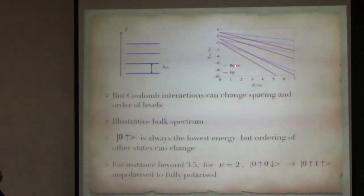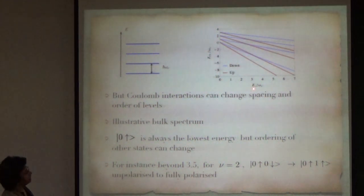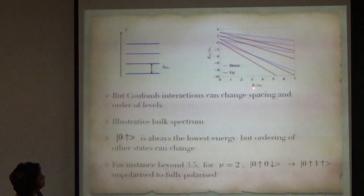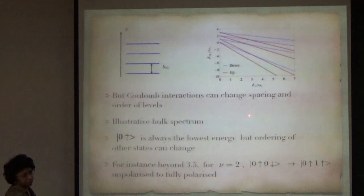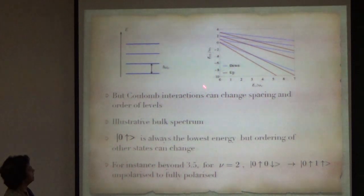But Coulomb interactions can change the spacing and order of the levels. Even if you put a slight Coulomb interaction, this is just an illustrative example I am giving. Once you put in Coulomb interaction, the red and the pink/blue are spin up and spin down. What you find is that the minute you put in a Coulomb interaction, measured by E_C/ωc, the Coulomb interaction in units of the Landau level spacing, they split.